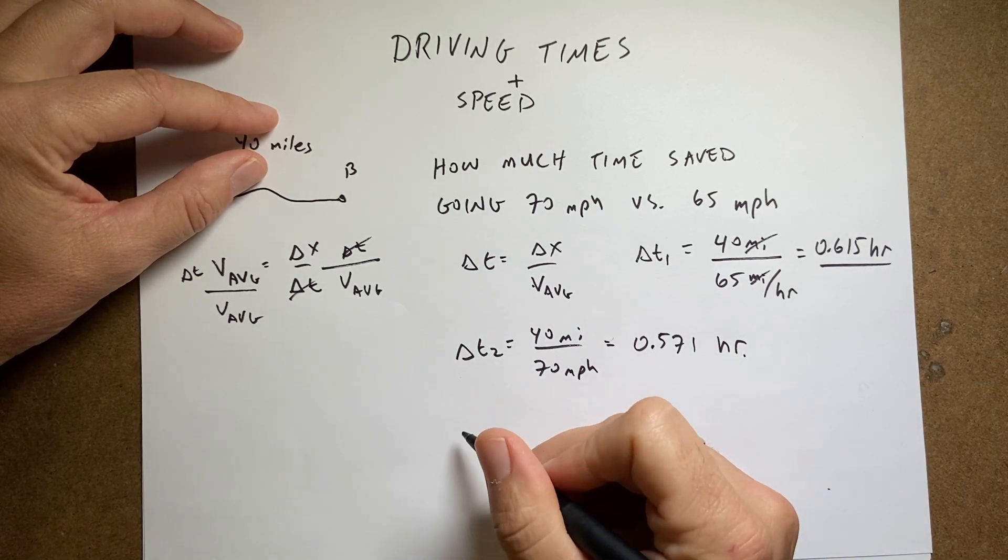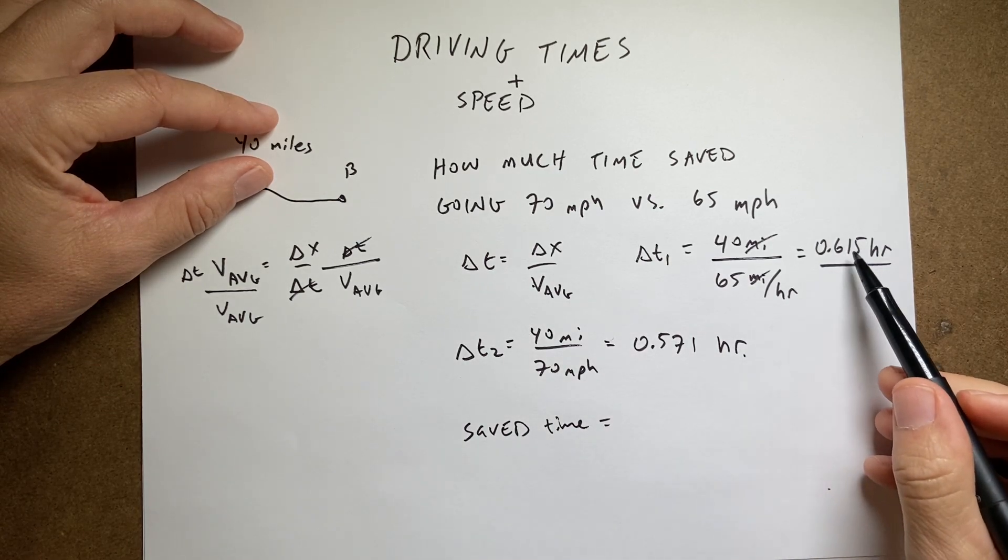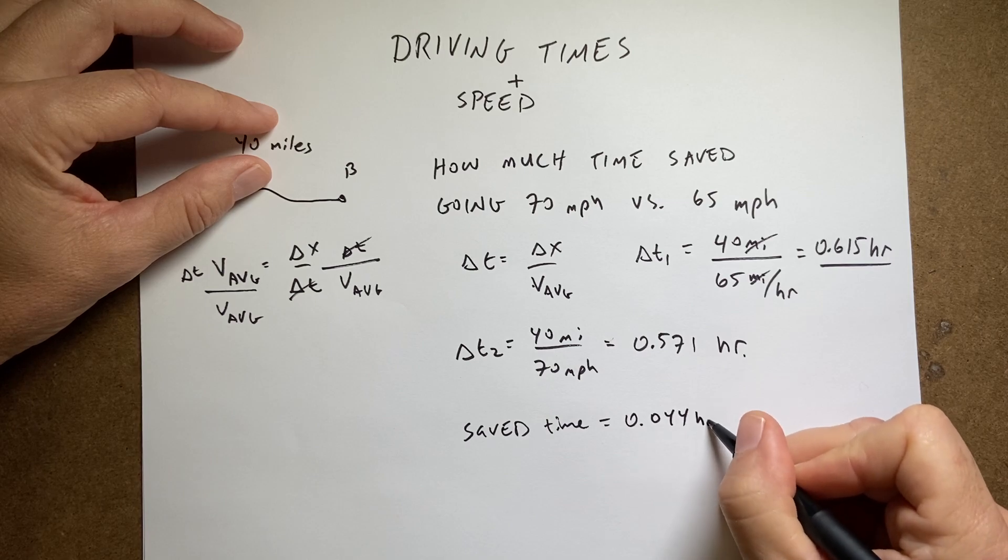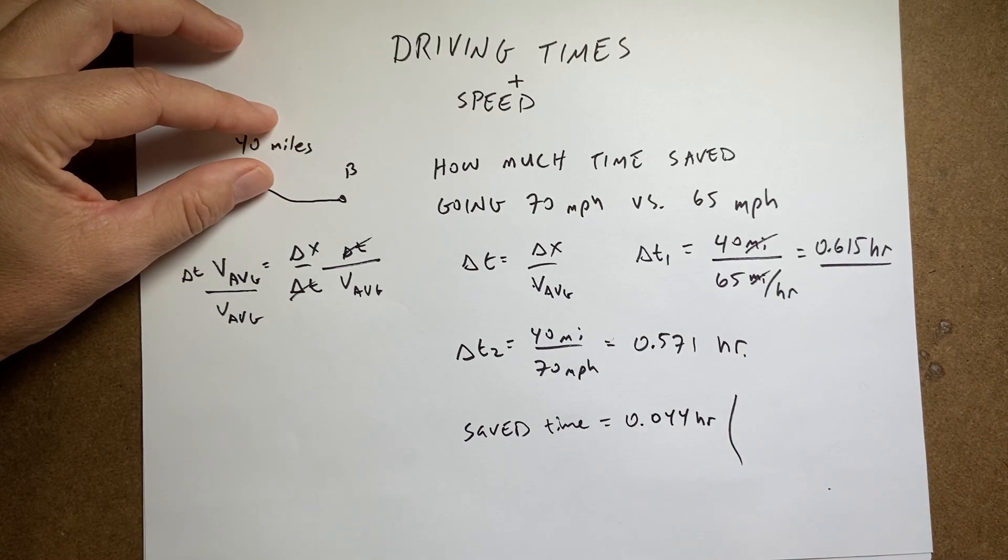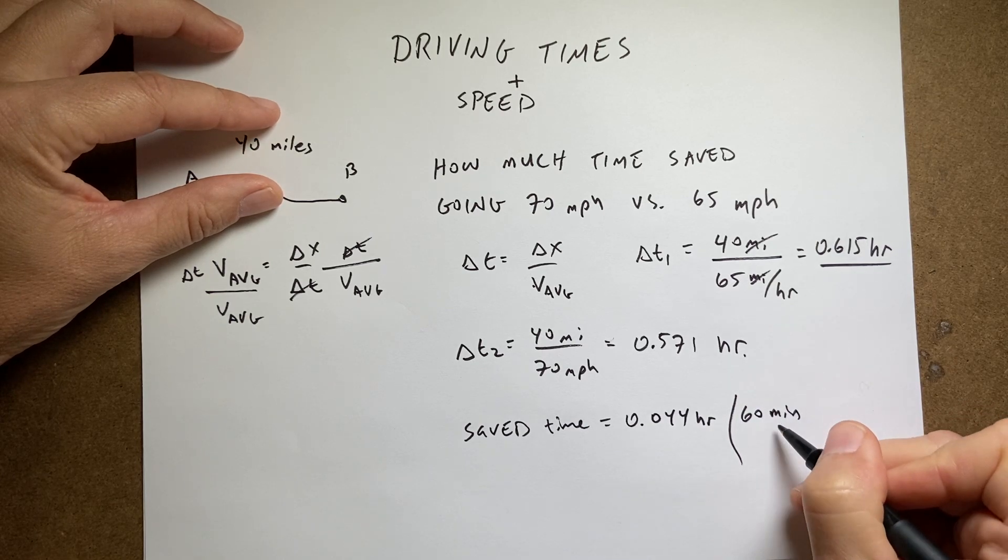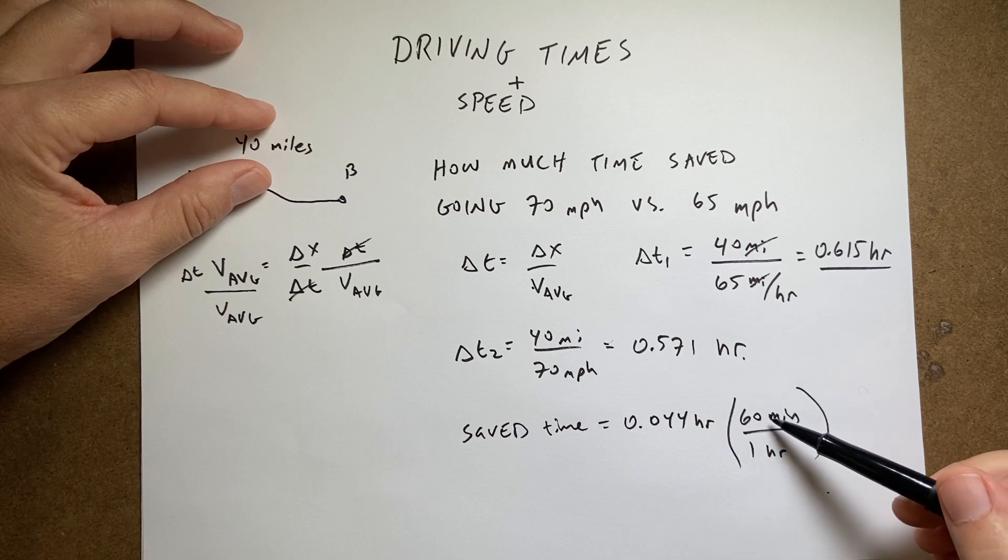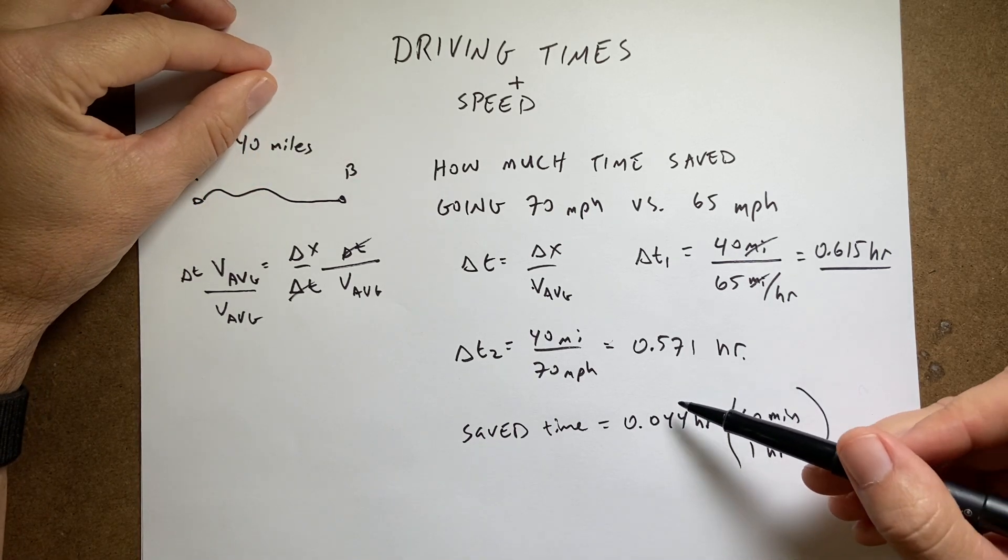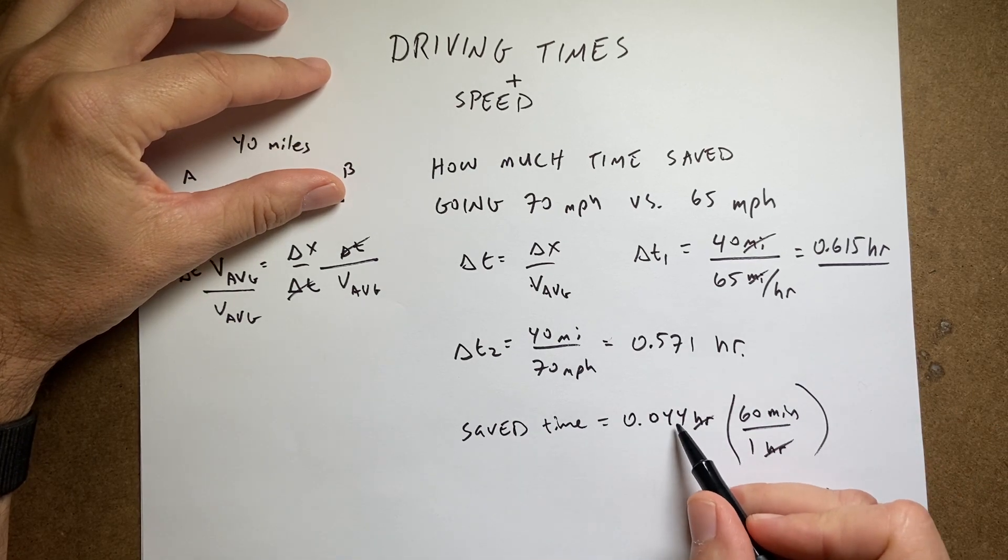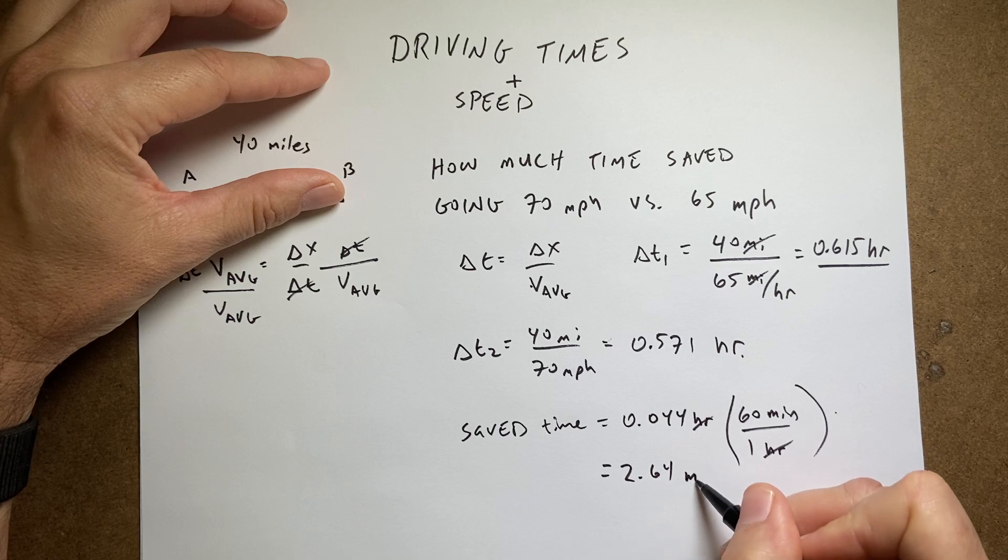So the saved time is going to be just this minus that, and I get 0.044 hours. And let's convert that to minutes. So if I multiply this by 60 minutes divided by 1 hour, this quantity has a value of 1, because 60 minutes is 1 hour, even though they have different units. So I'm not really changing the answer by multiplying it by this. But the hour units do cancel, and I get 0.044 times 60, and I get a time saving of 2.64 minutes.